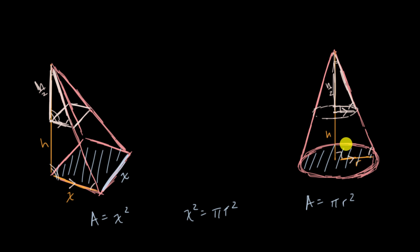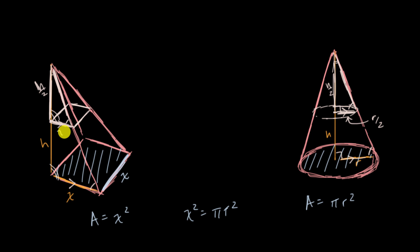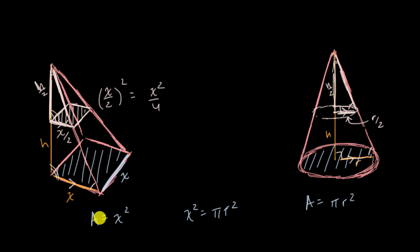The similarity tells us that the ratio between corresponding sides is the same. If this side is h over two and the entire height is h — so this is half the entire height — then the half-base side of the pyramid is x over two. So the cross-sectional area of the pyramid at that midpoint is (x/2) squared, which equals x squared over four, which is one-fourth of the base's area.